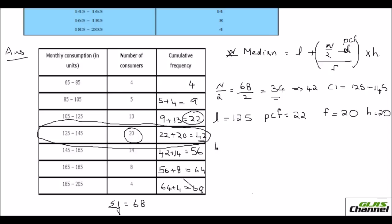Now let us apply this in the formula and get the answer. So your median is equal to the lower limit which is 125. Plus open the bracket. n by 2 is 34 minus previous cumulative frequency is 22, divided by frequency which is 20, times H which is 20. So this would get cancelled. So you get 125 plus this is 34 minus 22 is 12. So your median is equal to 137.